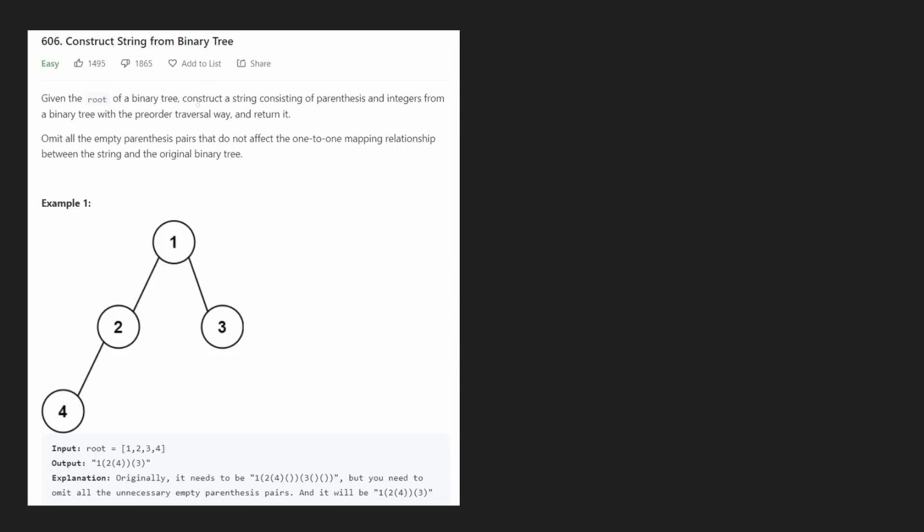We're given the root of a binary tree and we want to construct a string consisting of parentheses and integers from the binary tree with the pre-order traversal way and then return it. Now this is kind of confusing and I think they definitely could have worded this problem better, especially for an easy problem. But essentially, we want to do a pre-order traversal.